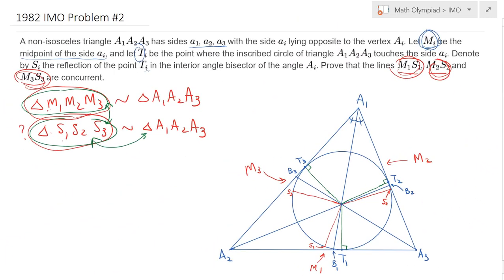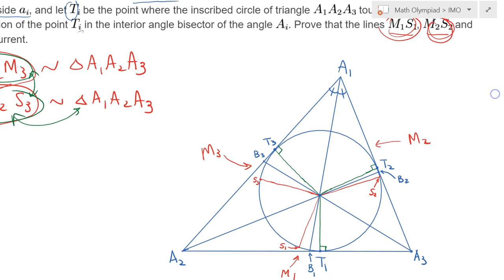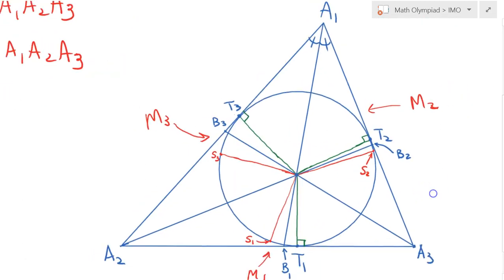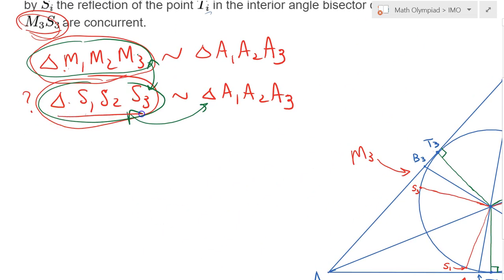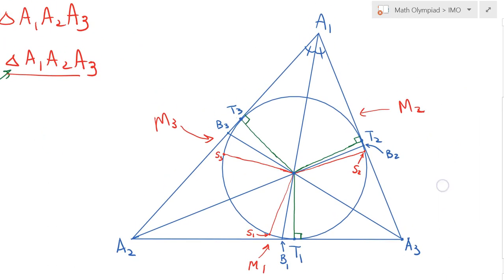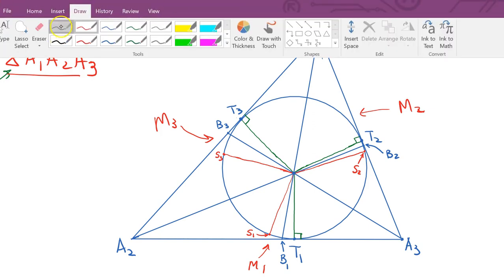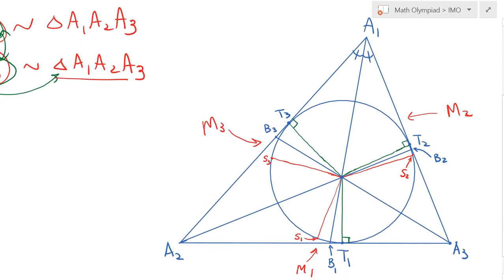Going back to our problem: our goal is to show that triangle S1 S2 S3 is similar to triangle A1 A2 A3. One way to do this is to show that all three sides of triangle S1 S2 S3 are parallel to the corresponding sides of A1 A2 A3. We can do some angle chasing to that end.